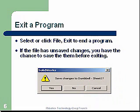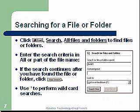Searching for a file or folder — click Start, your start button at the lower right. Search all files and folders to find files or folders. Enter the search criteria and all or part of the file name. If the search continues after you have found the file or folder, you can click Stop Search. You can also use it to perform wildcard searches.